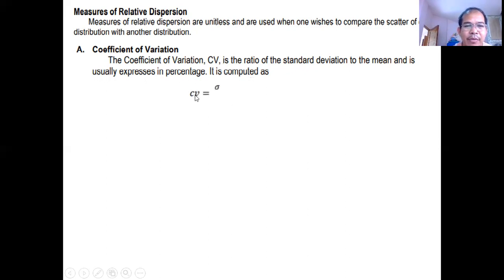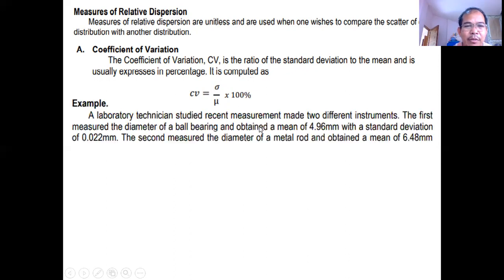The formula, we have CV. If the data is population, we have population standard deviation over population mean. Then, i-multiply ito by 100. Kaya, ang result ng CV is in percent. If the given data is sample, we have, this one is letter S, sample standard deviation over X bar, which is the sample mean.